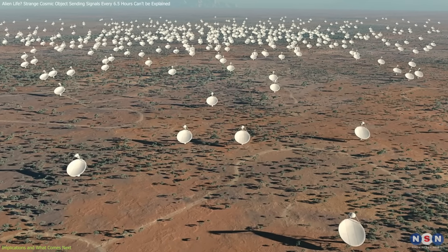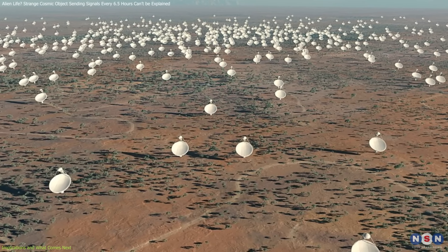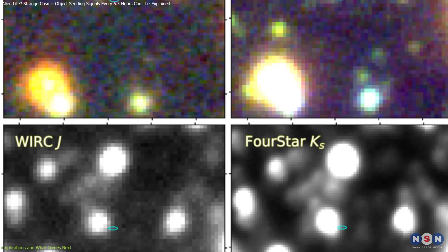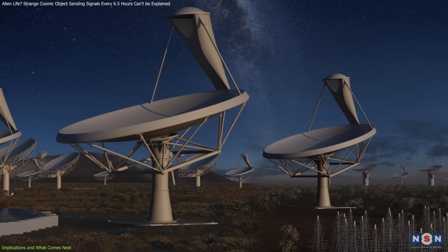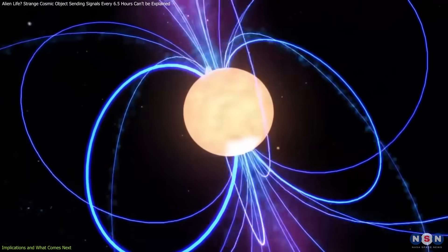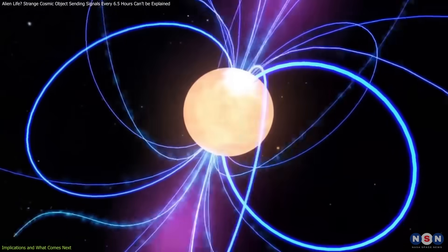Future studies with the Square Kilometer Array, the next generation global radio telescope, will be crucial in identifying more objects like ASCAP. The SKA will be 100 times more sensitive than this object, enabling us to detect even longer period neutron stars and refine our models.